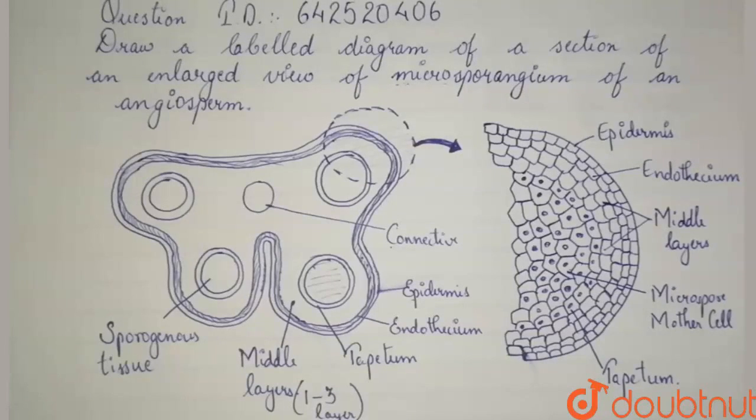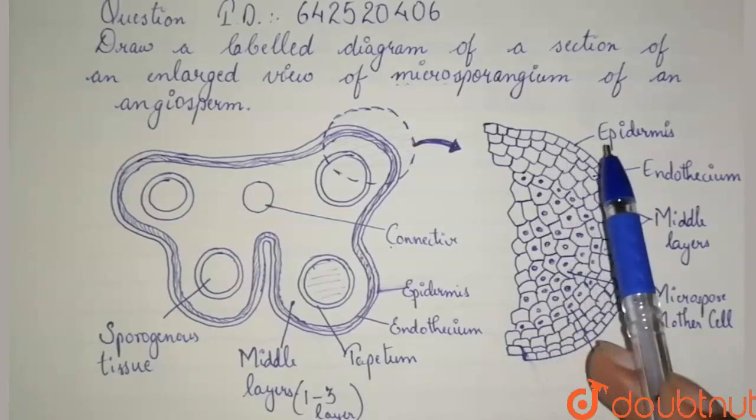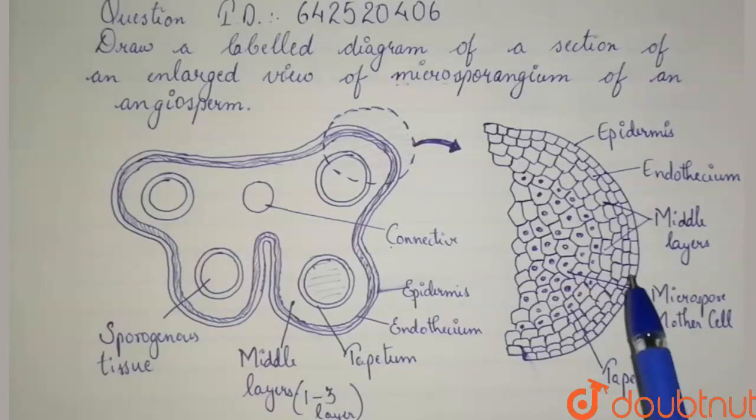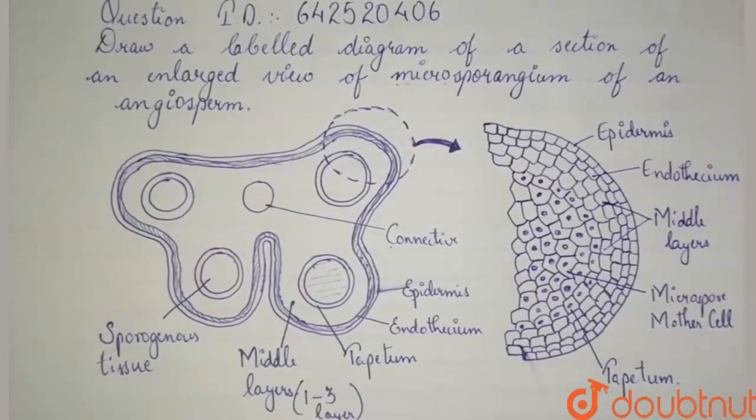Now, let's see the functions of these layers. The epidermis, the endothecium and the middle layers are protective in nature. They also help in the dehiscence of anther. That is, when the anther matures, these layers help the anther to burst open and the pollen grains are released.